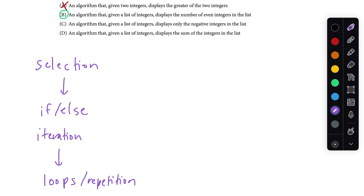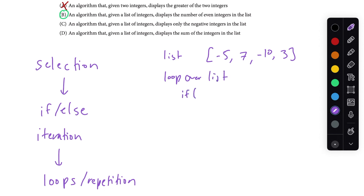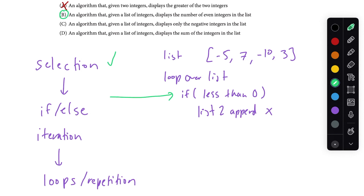Next: an algorithm that, given a list of integers, displays only the negative integers in that list. We'd have a list like negative five, seven, negative ten, three. To go through the list we'd loop over it, and inside the loop we'd check if the value is less than zero, then append it to another list. This has selection — checking whether the value is negative — and iteration — looping over every element. So C is also a right answer.